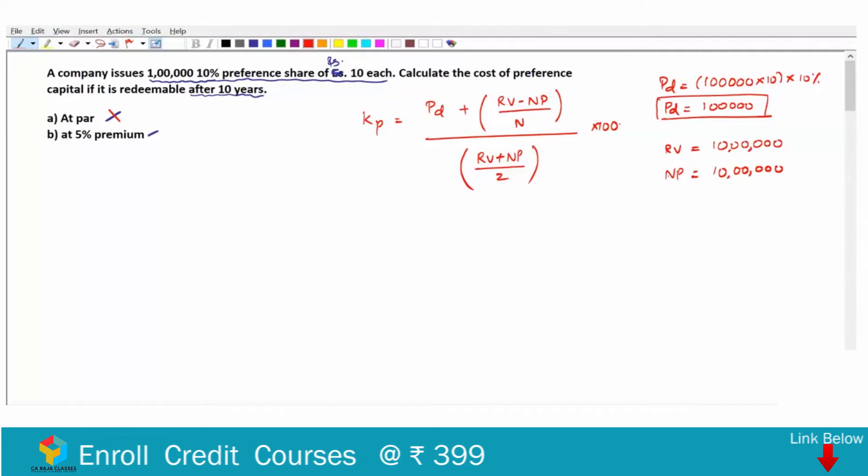And we are given that it is redeemable after 10 years. So we can say N is equal to 10. Now we can easily find out for case A where redemption is at par. Kp is equal to Pd which is 1,00,000 plus RV minus NP, that is 10,00,000 minus 10,00,000, whole divided by 10, and this whole divided by 10,00,000 plus 10,00,000 by 2.